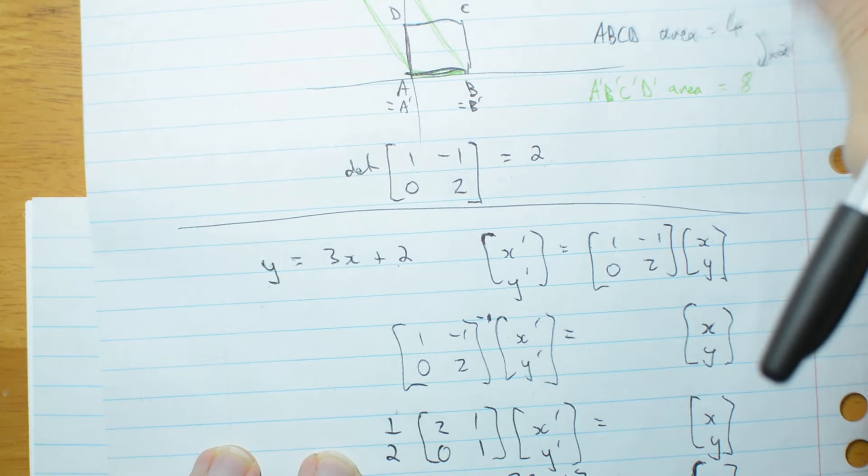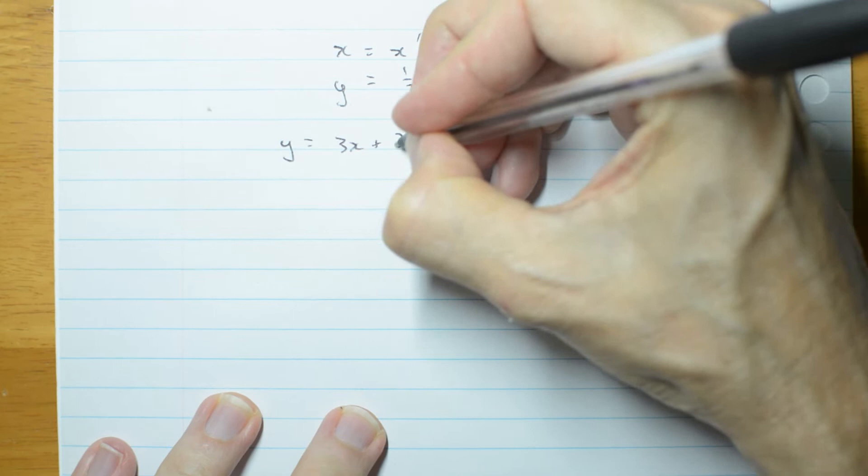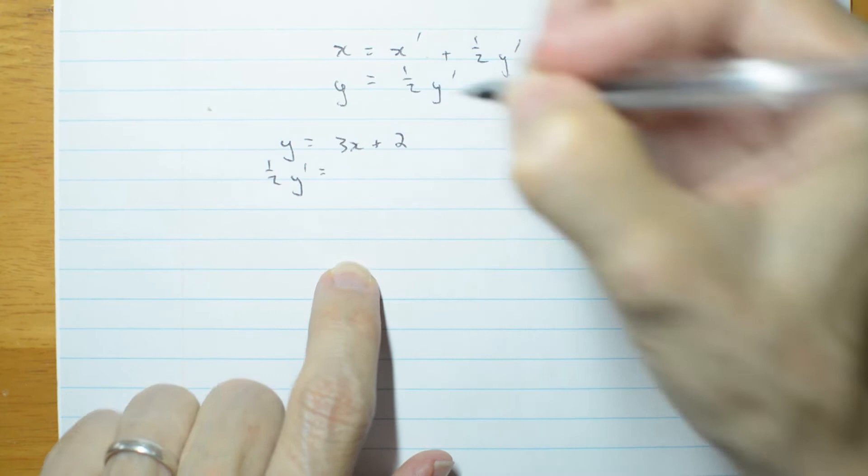Then I'm going to get my original equation, y equals 3x plus 2, and I'm going to substitute. y equals 3x plus 2. Let's put in y as half y dashed.